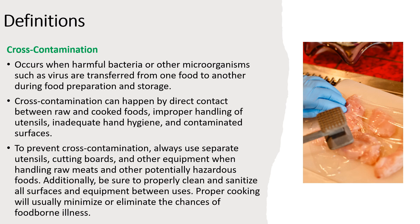Cross-contamination occurs when harmful bacteria or other microorganisms such as viruses are transferred from one food to another during food preparation and storage. This can happen when a surface, utensil, or person comes into contact with contaminated food and then comes into contact with another food that is not contaminated. For example, if a cutting board is used to prepare raw chicken and is not properly cleaned before being used to chop vegetables, the vegetables can become contaminated with harmful bacteria from the chicken.